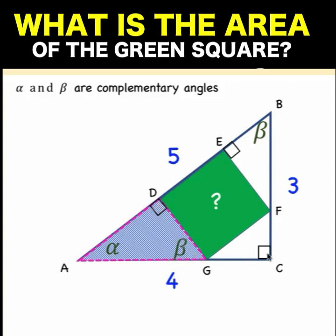Notice now that you have here 90 degrees, 90 degrees. Alpha is equal to itself and this beta is equal to this beta. Which means that the bigger triangle ABC and the smaller pink right triangle AGD must be similar triangles by AAA similarities.